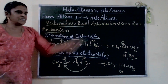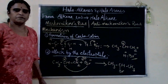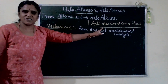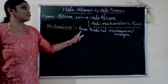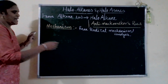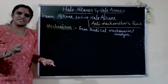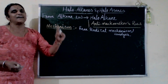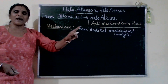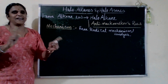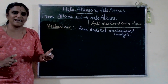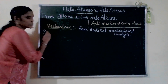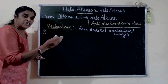Now for anti-Markovnikov's rule. The mechanism here is called free radical mechanism — homolysis. There are three steps: first, formation of the free radical from the peroxide; second, that free radical converts hydrogen bromide into a free radical; third, the bromide free radical attaches with the alkene to give the haloalkane. The peroxide (benzoyl peroxide) undergoes homolysis.